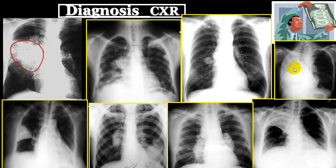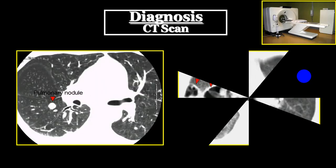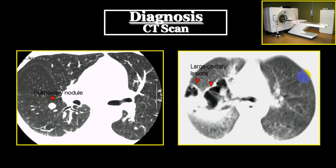In pleural effusion, the mediastinum shifts to the opposite side. If the trachea shifts to the same side, it is collapse of the lung — one of the most common causes being malignancy compressing the trachea or main bronchus. CT scan helps identify pulmonary nodules and cavitary lesions.